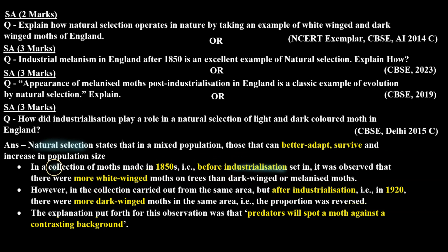Data collected before industrialization showed that the population of white moths was higher, because they hid against the white lichen background. Dark-colored moths were visible and predators consumed them, while light-colored moths were not consumed.